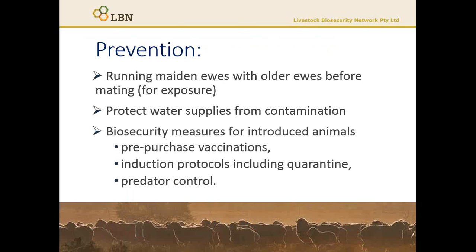Other prevention strategies for Vibriosis in sheep include running maiden ewes with old ewes before mating, giving them opportunity for exposure through contaminated material or gut bacteria. Protecting water supplies from contamination is recommended — use reticulated water rather than dams or springs that may become contaminated through faeces or aborted material. If using troughs, make sure they're cleaned regularly. Biosecurity measures for introduced animals include ensuring pre-purchase vaccinations have been undertaken, undertaking quarantine induction protocols, and predator control. Mixing of mobs pre-joining can also help with exposure.